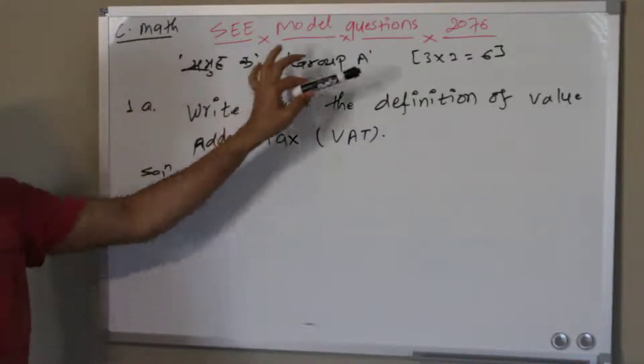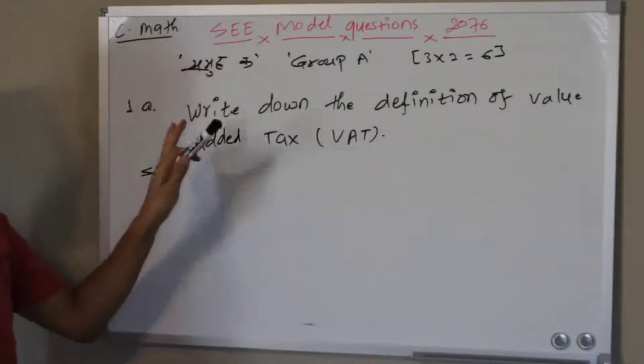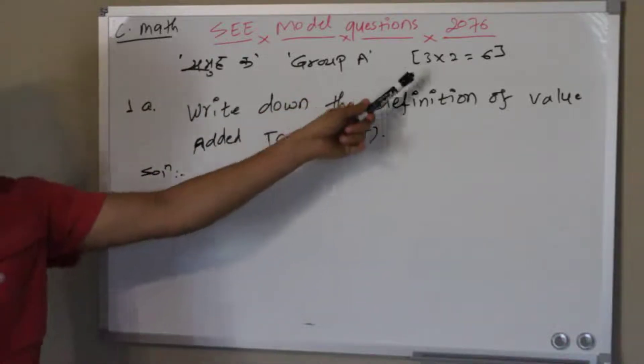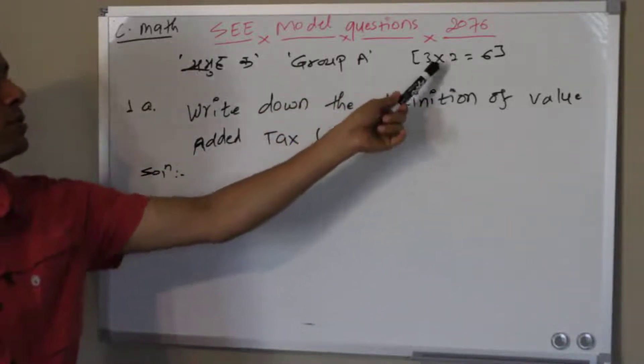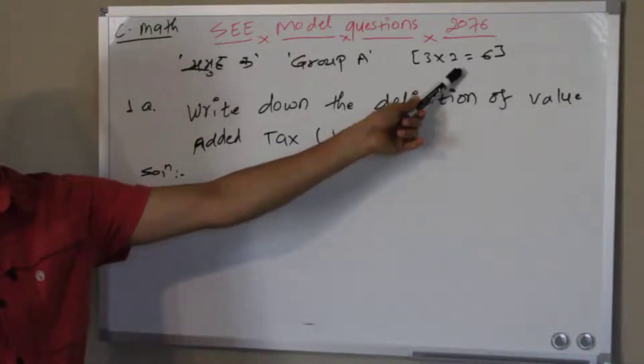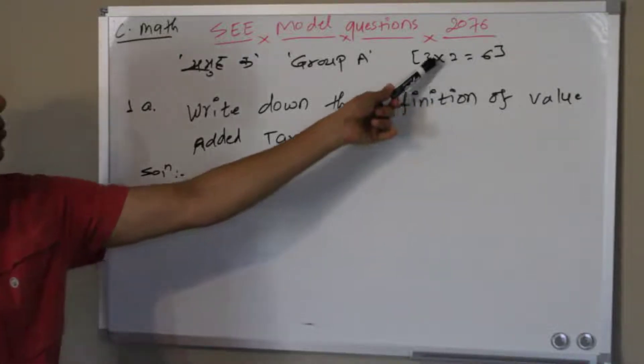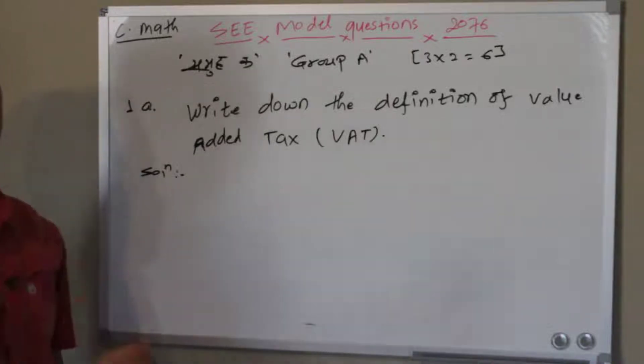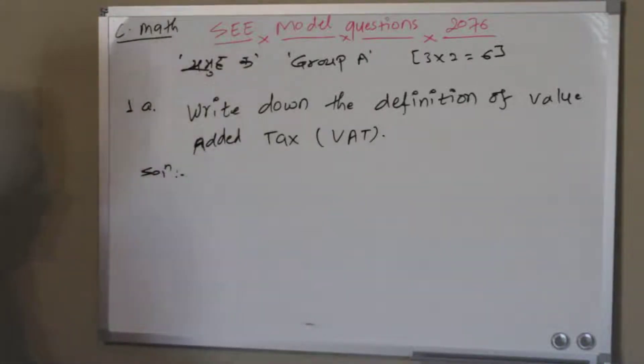Each question constitutes one point, so the total value of all these six questions - there are six questions, three times two, three questions, two short questions each, so total six questions and one point for each. These are extremely short questions, so you have to give very short answers.